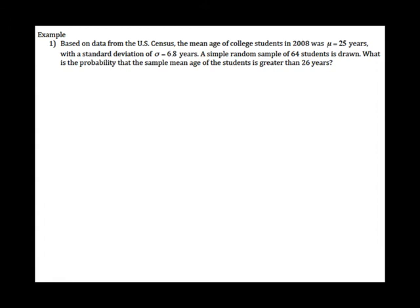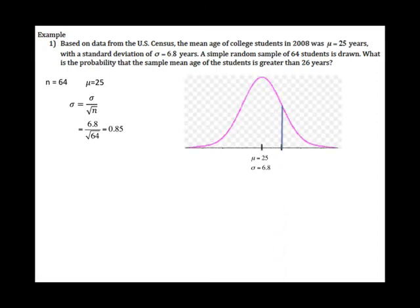First, find the mean — it doesn't change, it's still 25. Then find the standard deviation by plugging into the formula: 6.8 divided by square root of 64, which gives 0.85. Sketching the graph: the mean is 25 and we want to find the probability that the sample mean is greater than 26, so x = 26. Greater than 26 means we are looking for the area to the right.